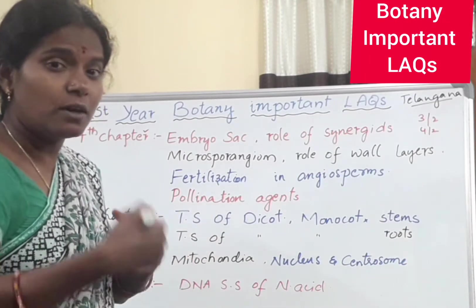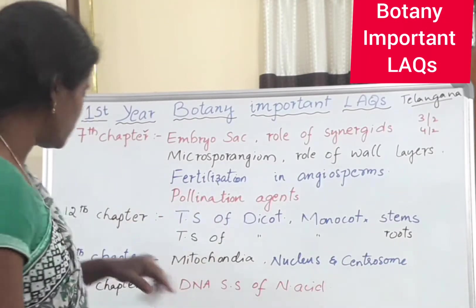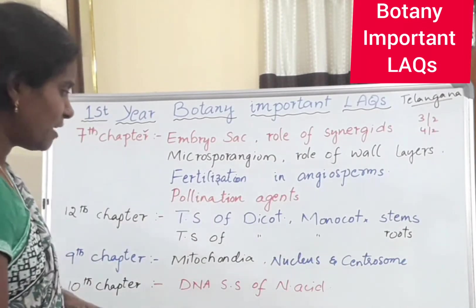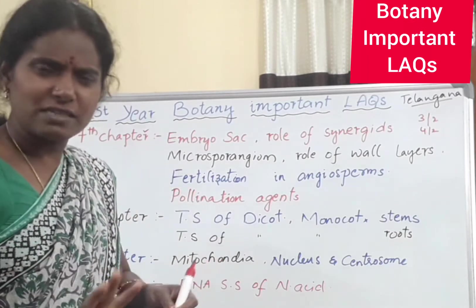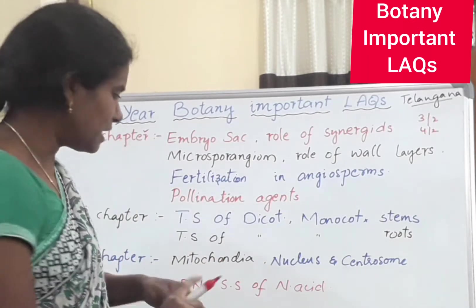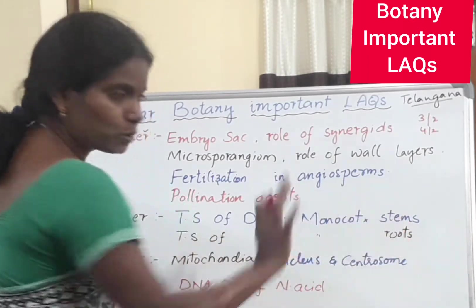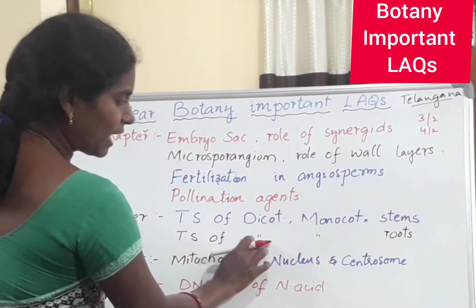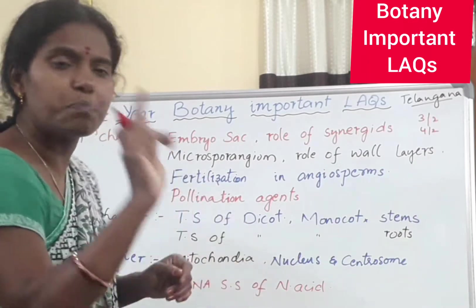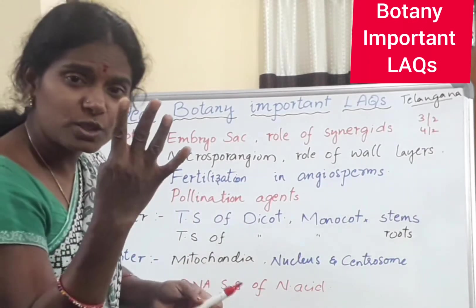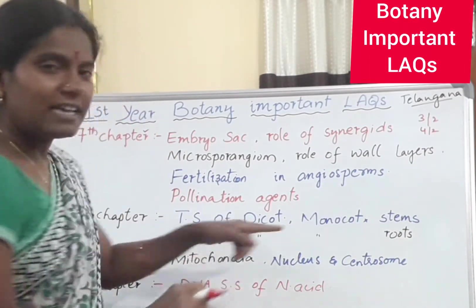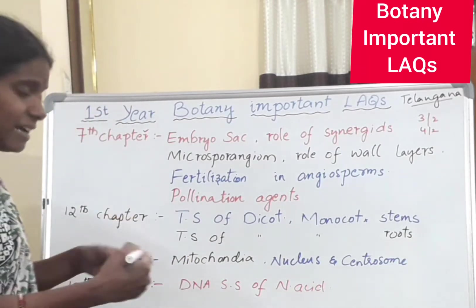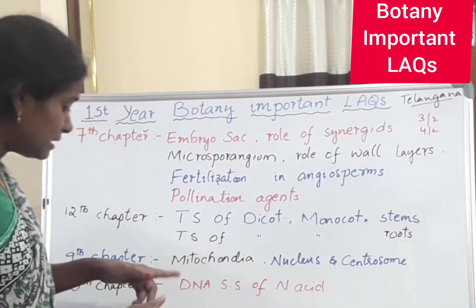The next confirmed chapter is Chapter 12. In that chapter, maximum all concepts are deleted — only a few concepts are there. That is the stem and root TS: dicot stem, monocot stem, TS of dicot root, and monocot root. From this, definitely one question will come.